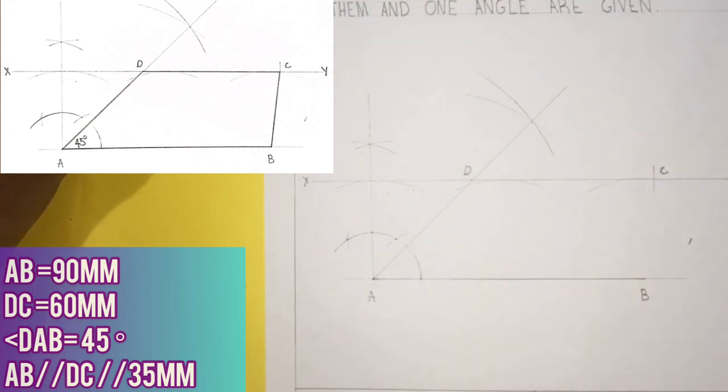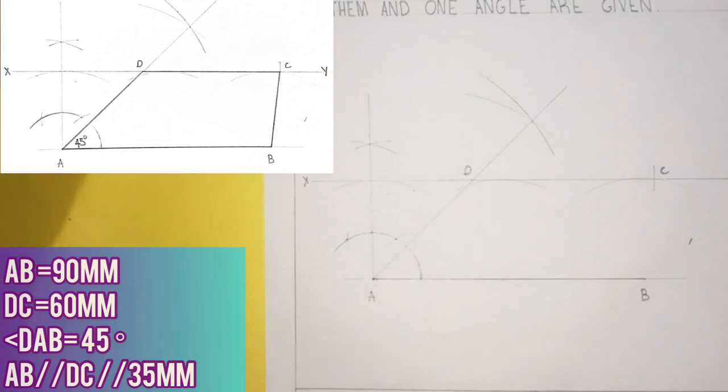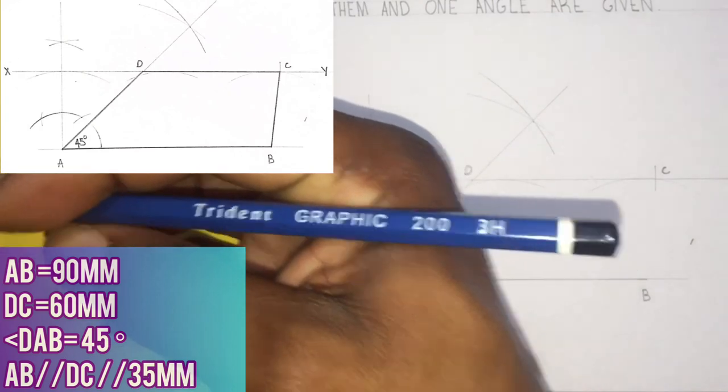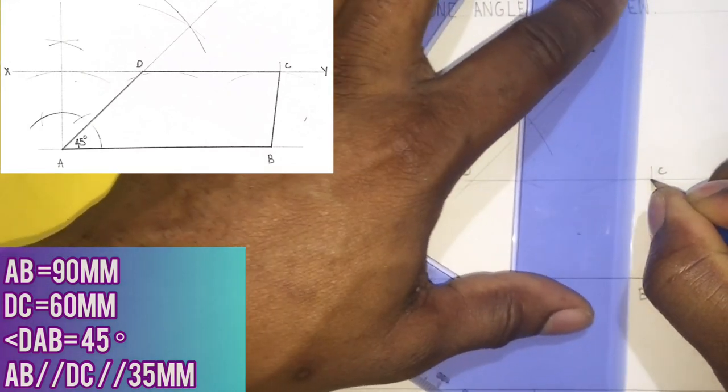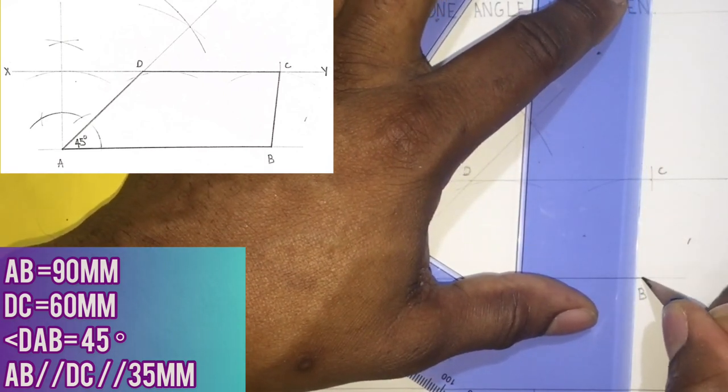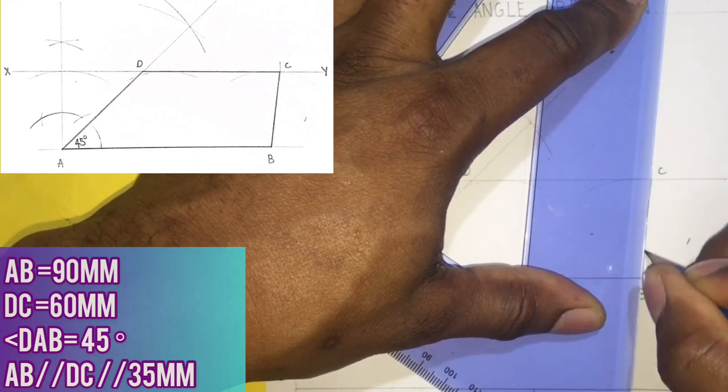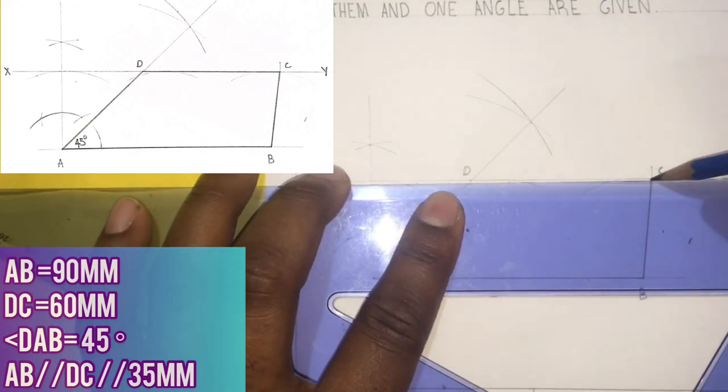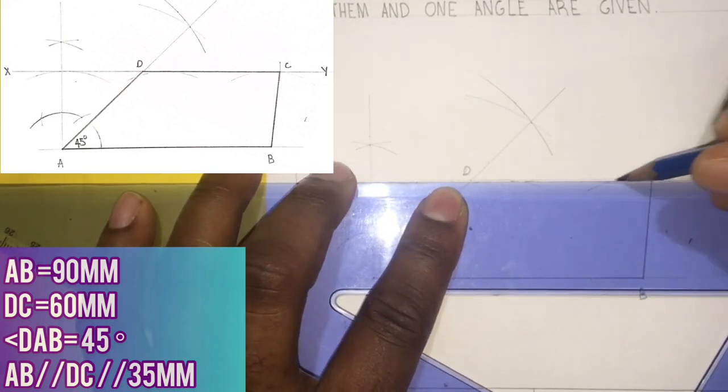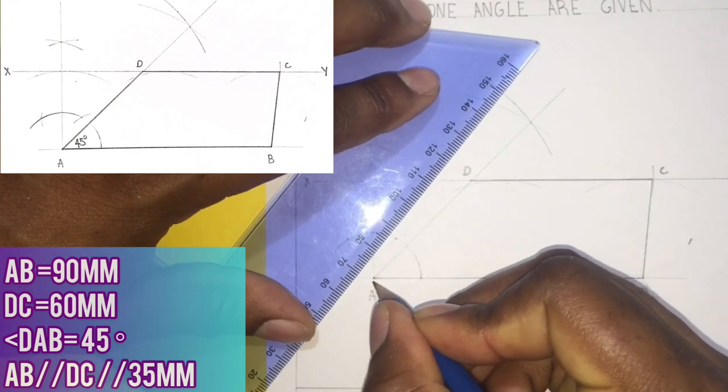Now the final step is to connect B to C and outline my required trapezium. I will now outline B to C, also D to C, and finally outline A to D.